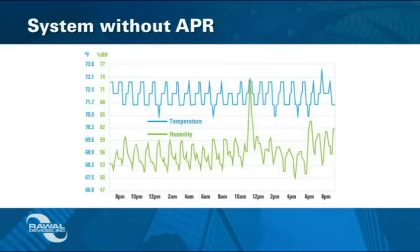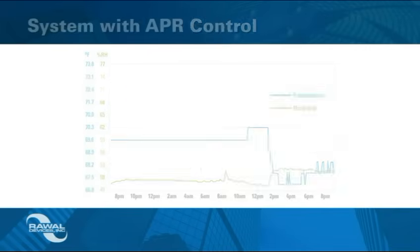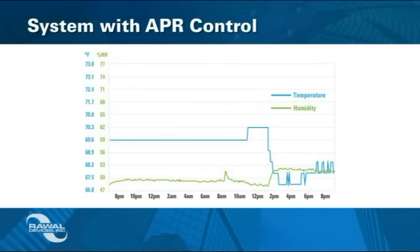In this example at a hotel in Florida, the graph shows the results of failing AC equipment. Wide swings in temperature and humidity caused mold to grow on the room's beds and other surfaces. When the APR Control was installed, the AC equipment precisely controlled the room's temperature and humidity.